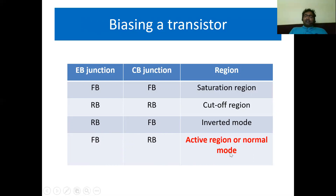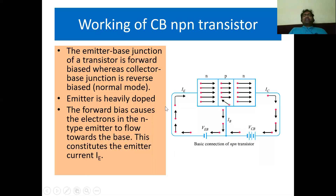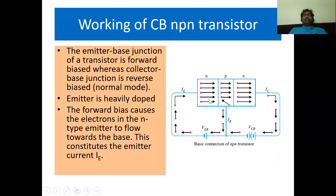Let us see the working of a common base NPN transistor. First, understand what is common base configuration. To work any electronic device it should have four terminals — two for input and two for output. A transistor has only three terminals: emitter, base, and collector. To overcome this problem, the base is made common for both input and output — that is why this is called the common base configuration.